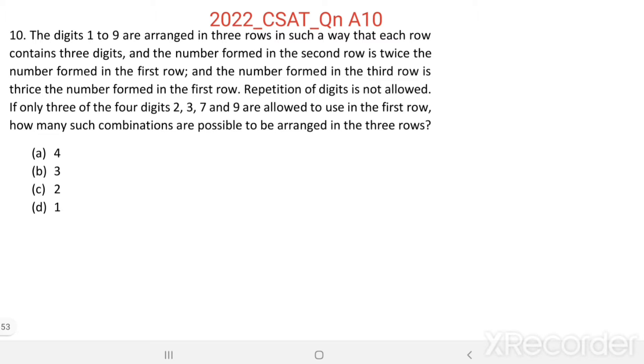If only 3 of the 4 digits 2, 3, 7, and 9 are allowed to be used in the first row, how many such combinations are possible to be arranged in 3 rows?